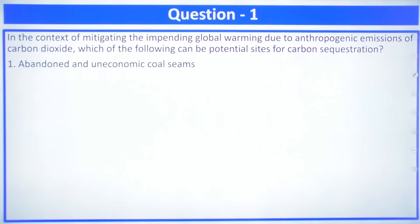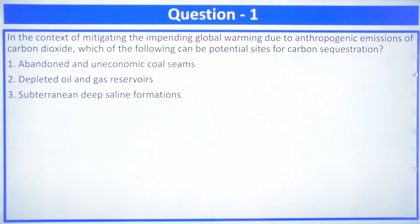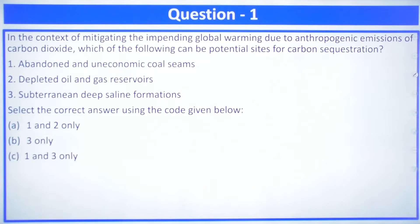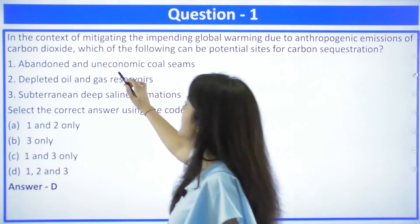The potential sites are: first, abandoned and un-economical coal seams; second, depleted oil and gas reservoirs; third, subterranean deep saline formations. The options are: one and two only; three only; one and three; or one, two and three. The answer here is one, two and three.